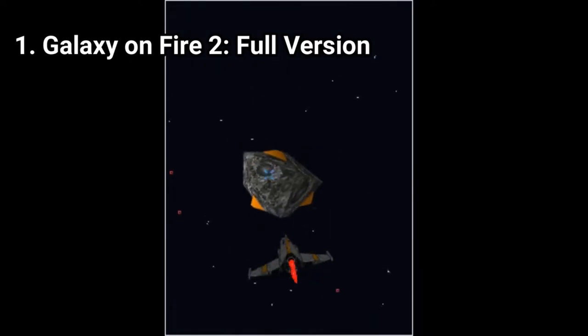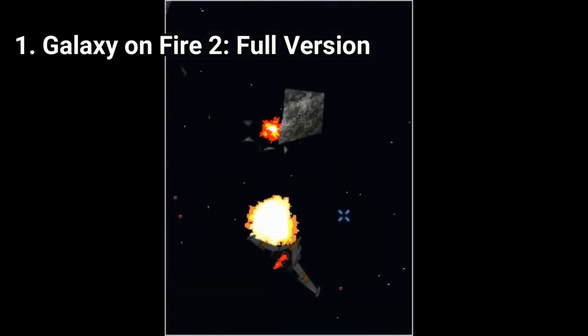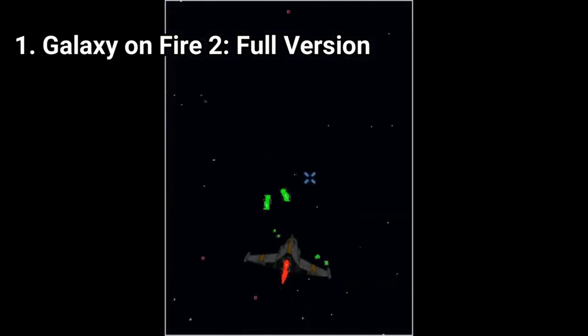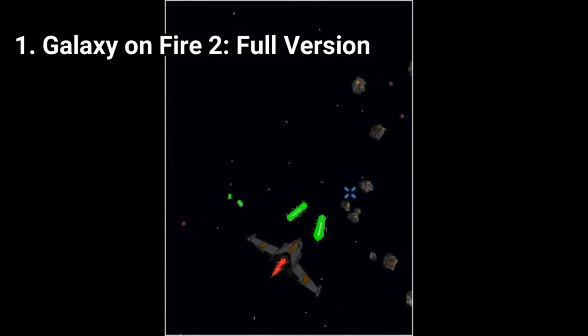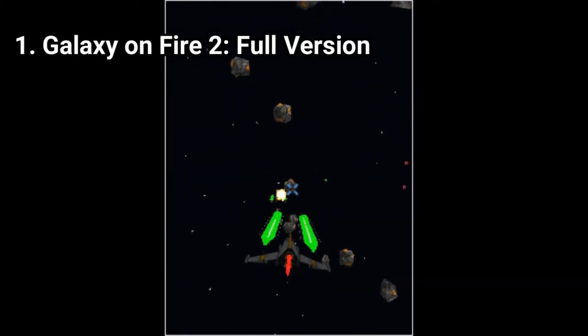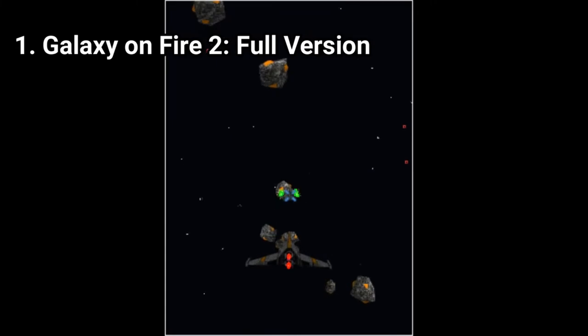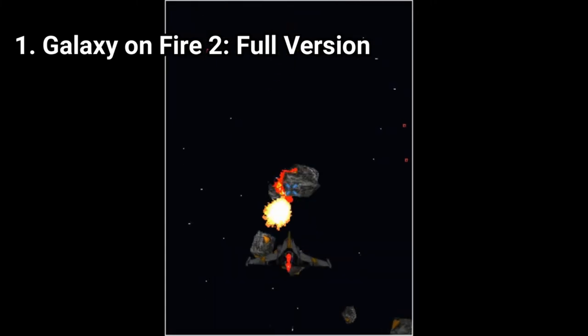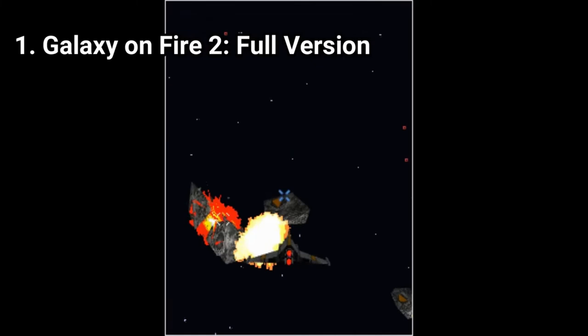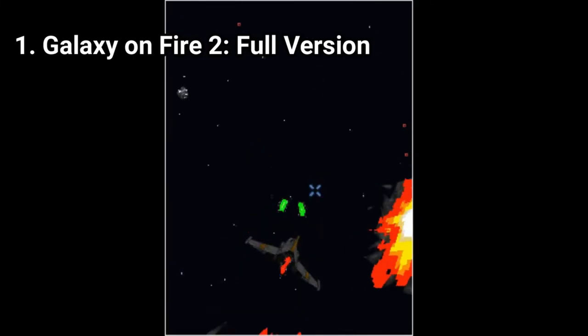Galaxy on Fire 2 and Galaxy on Fire 2nd Dimension are marvelous games that show what a tiny Java phone is capable of. All you do during the gameplay is what you see in the video, meaning that in both games you just fly and shoot anything that crosses your path.